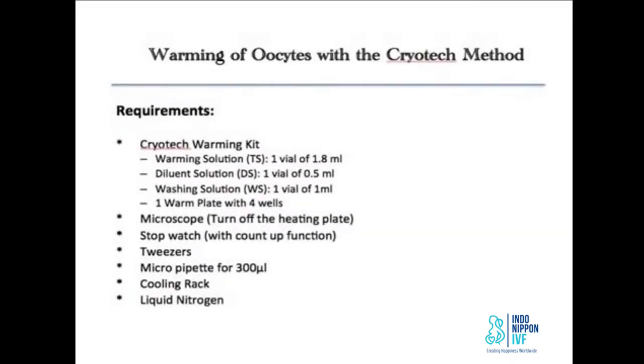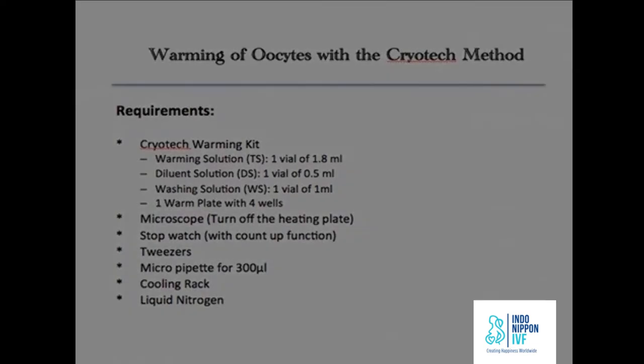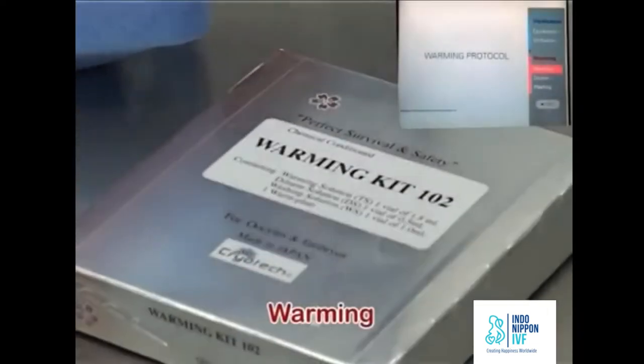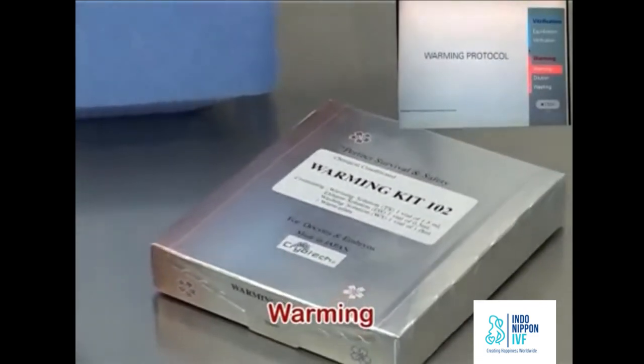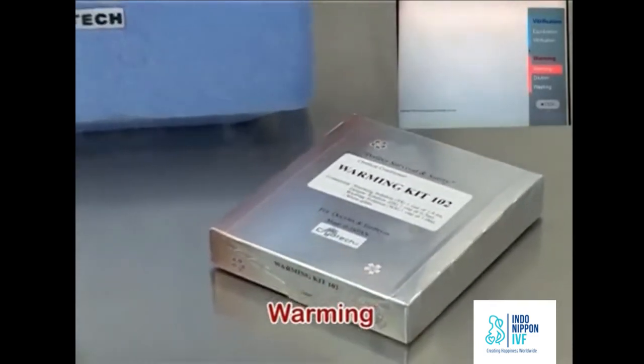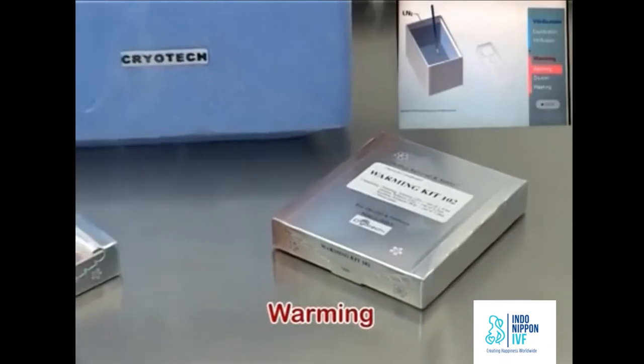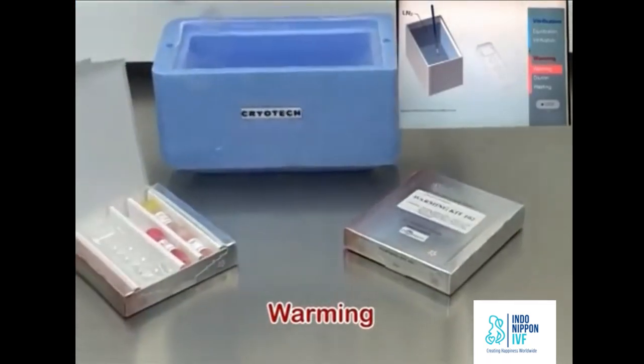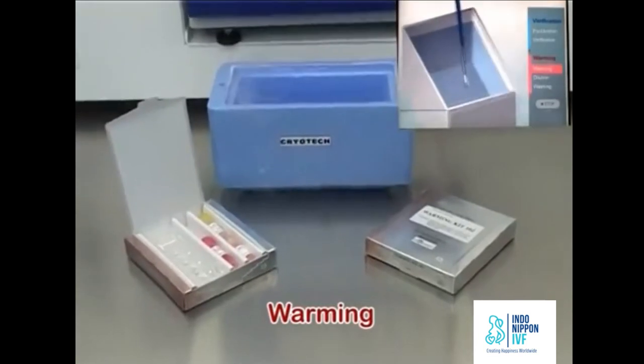The warming process. Before beginning the process, ensure that the microscope stage heating is turned off. Use a pipette that is the right suitable internal diameter to optimize the dilution of the solutions to get a high survival rate after warming. Place the warm plate and TS vial with cap in the incubator at 37 degrees at least 4 hours before warming. Overnight storage is recommended. Bring DS and WS vials to room temperature of 25 to 27 degrees centigrade at least one hour before warming.